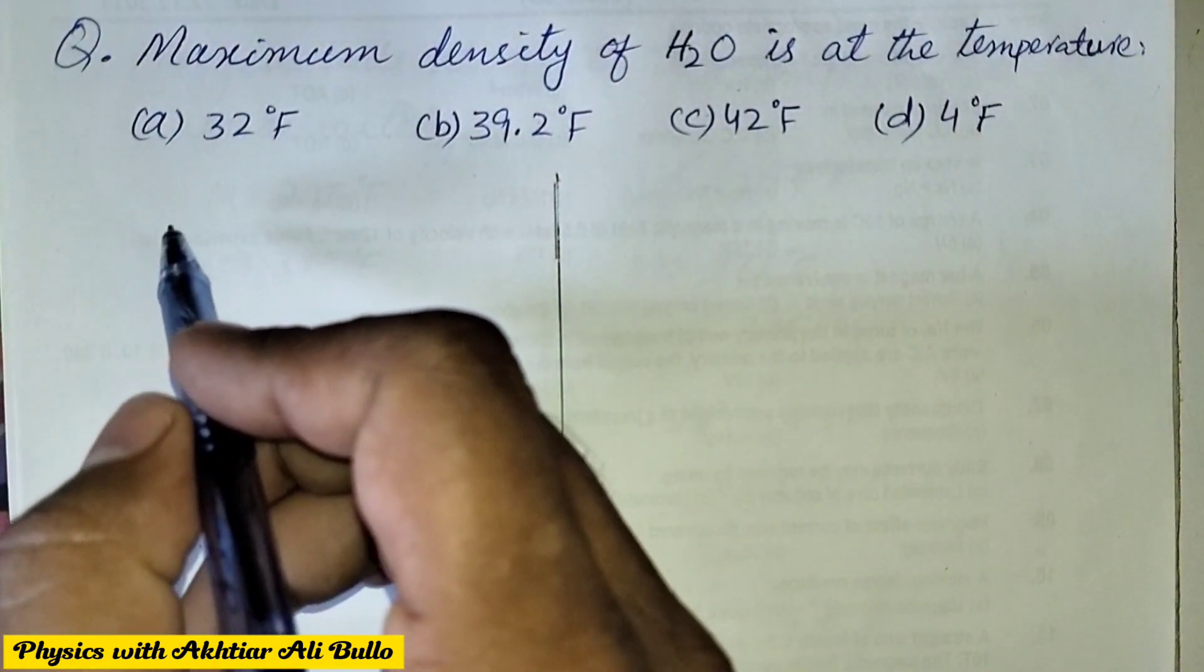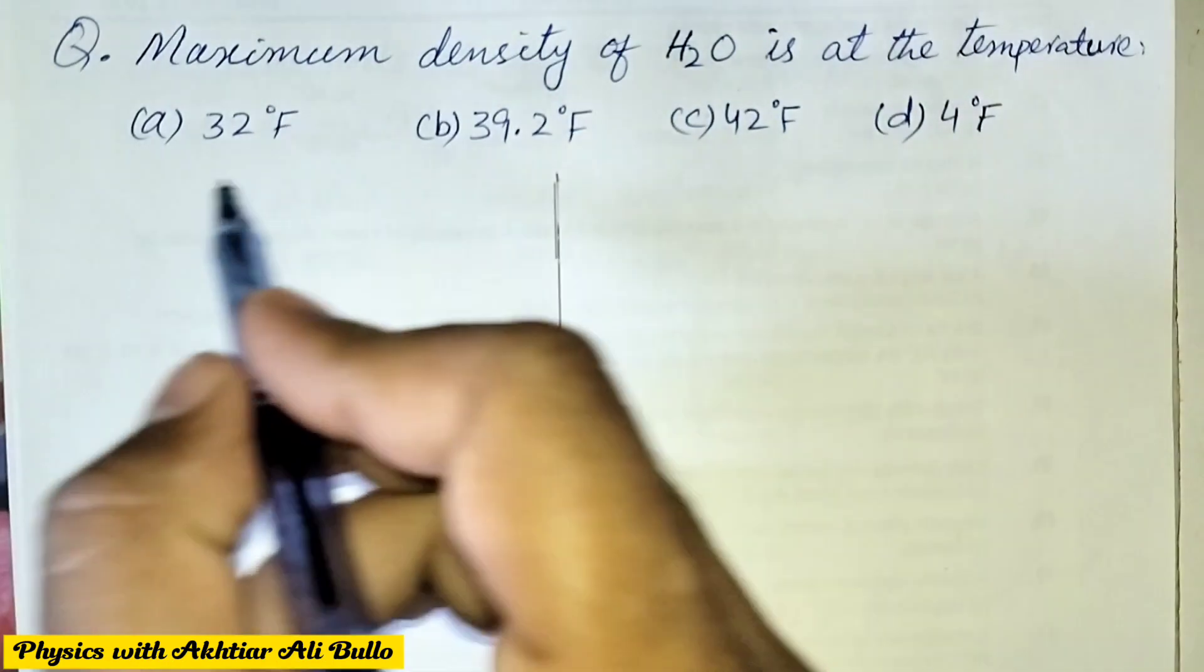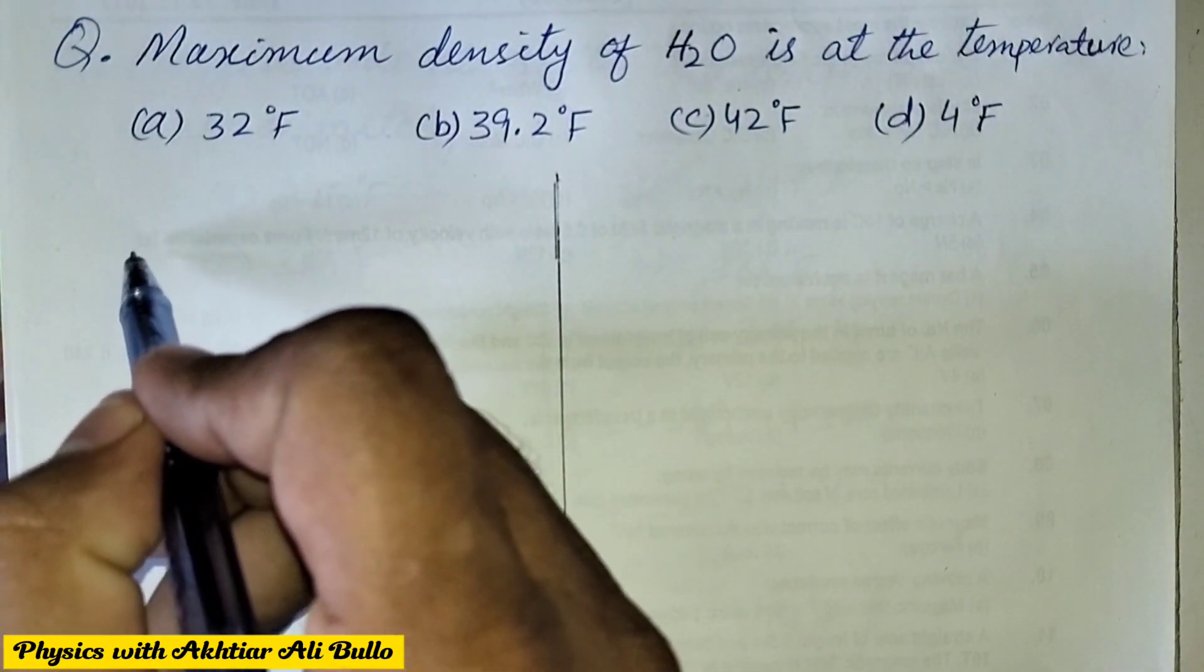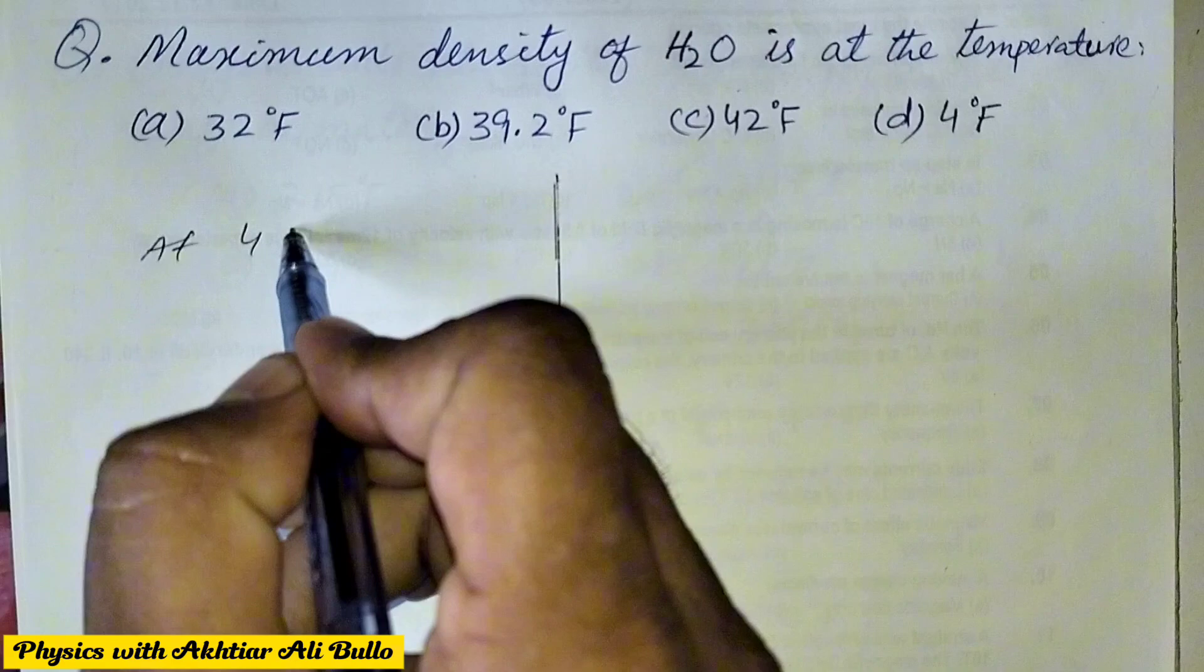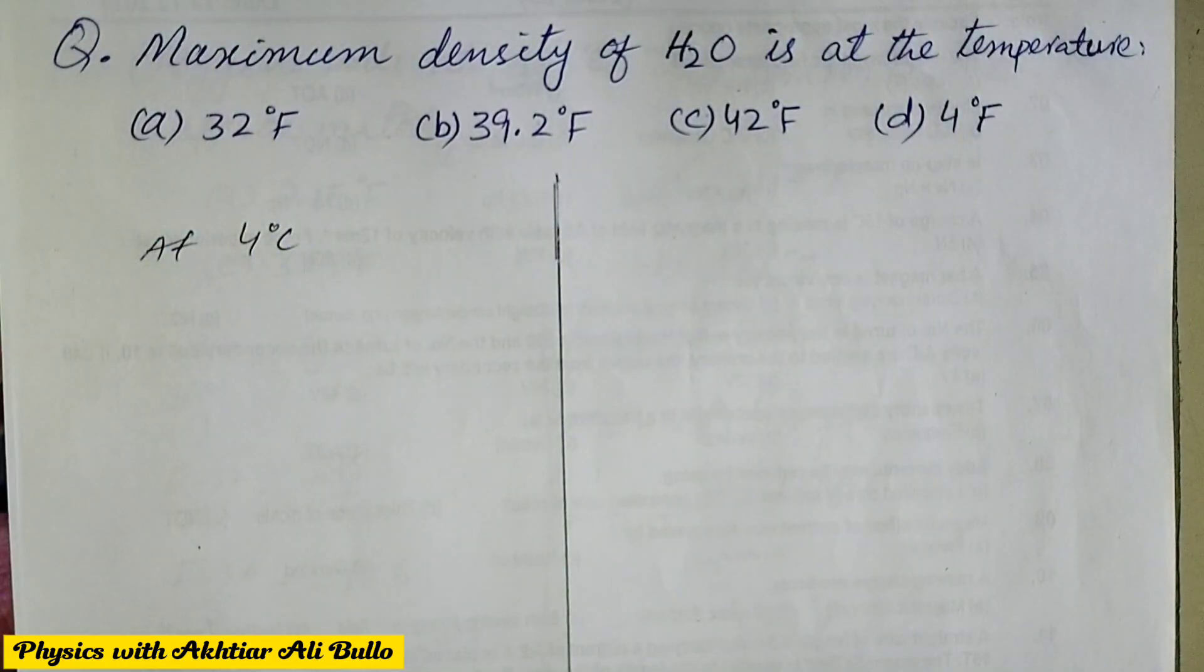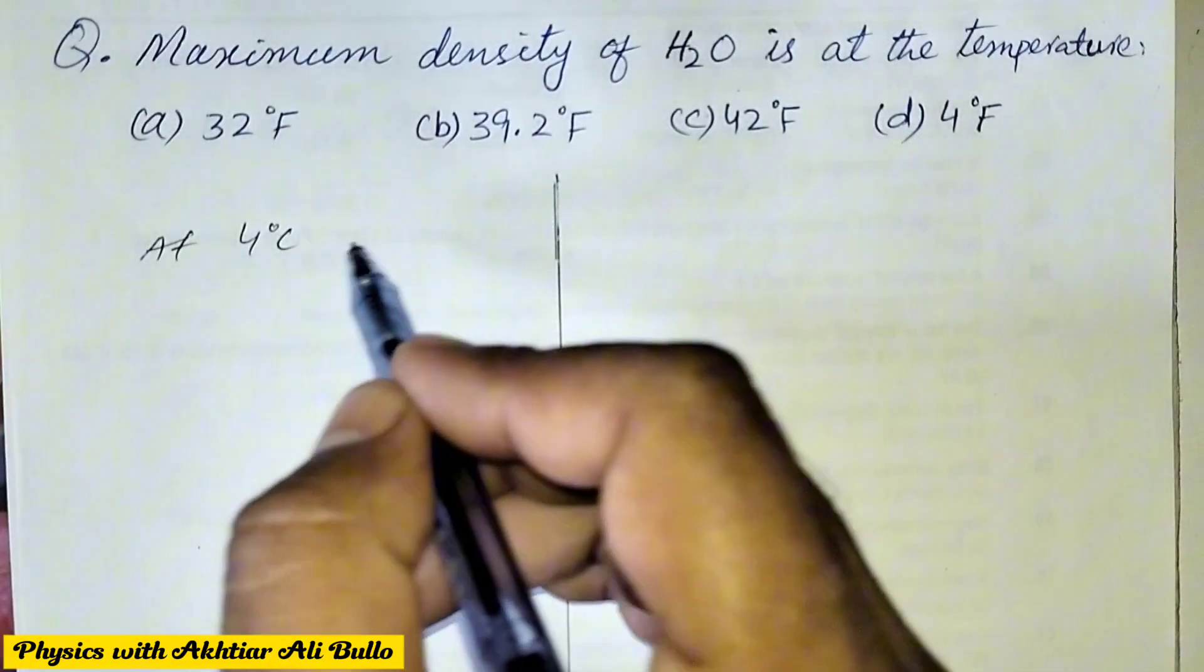As maximum density of H2O means water is at 4 degree Celsius, we will convert it into Fahrenheit.